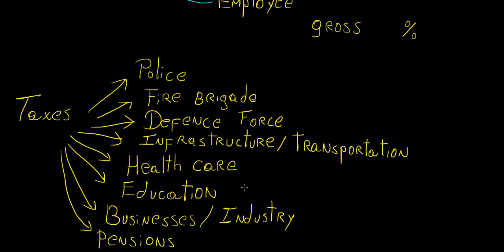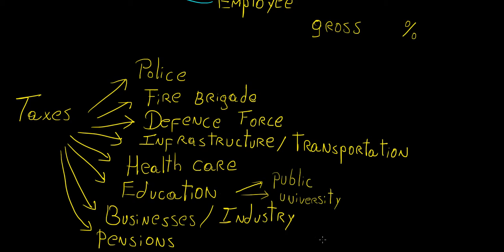Then you have education, which includes mainly public education — primary and secondary schools. Part of that education money also goes to university funding. Even though in countries like Australia most universities are basically self-sustained, meaning you pay the university for a degree, the government money is to sustain things like research. A lot of important discoveries in medicine and engineering come from university research, which is why funding also needs to go into universities.